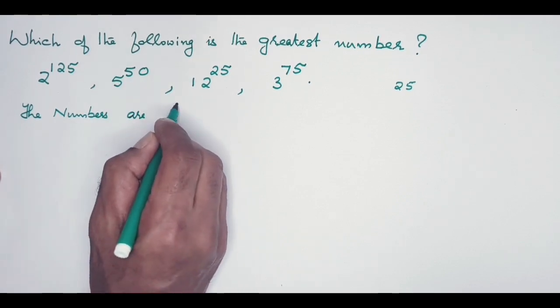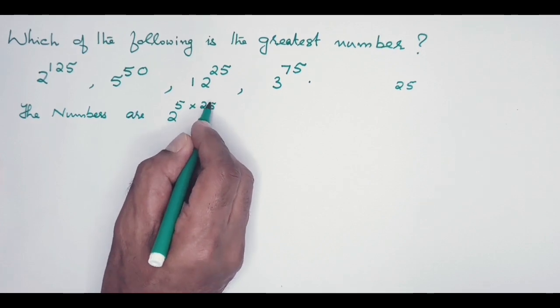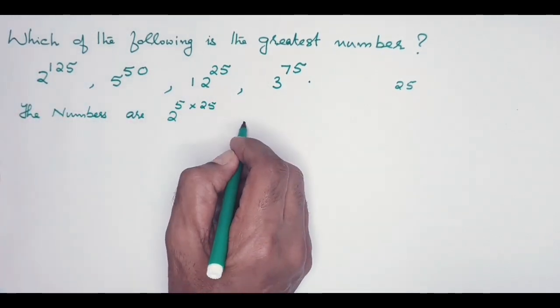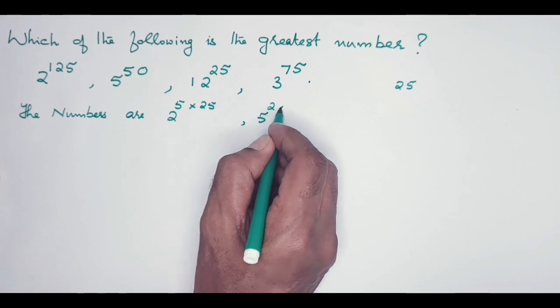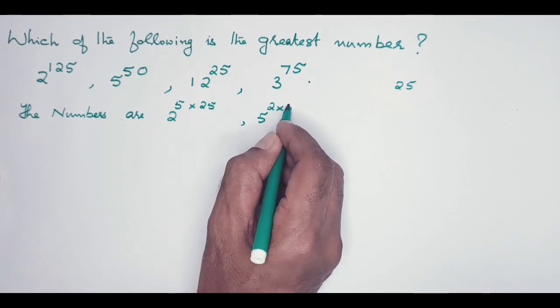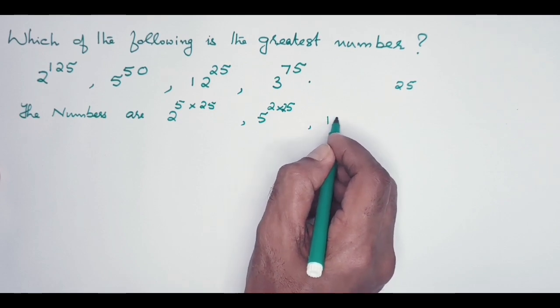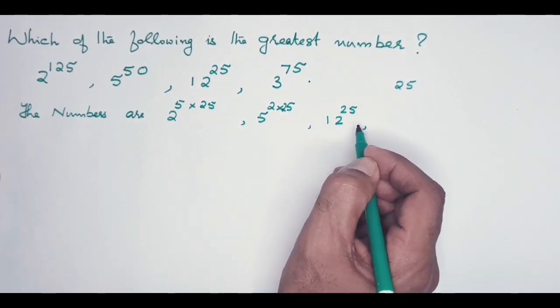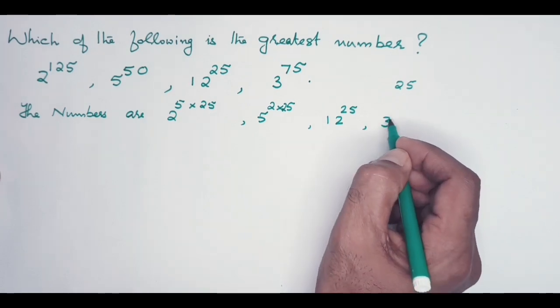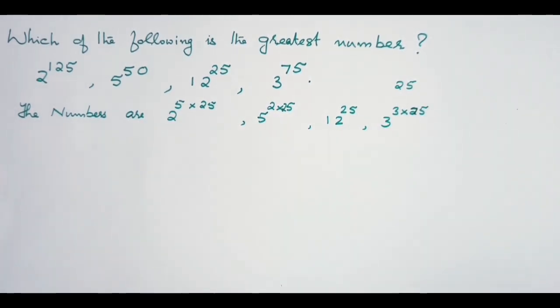2 to the power of 5 multiplied by 25, which is 125. The next number is 5 to the power of 2 multiplied by 25. The next one I'm writing as it is: 12 to the power of 25. And the last one is 3 to the power of 3 multiplied by 25.